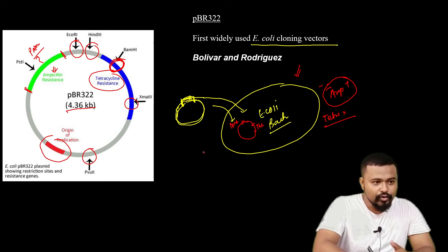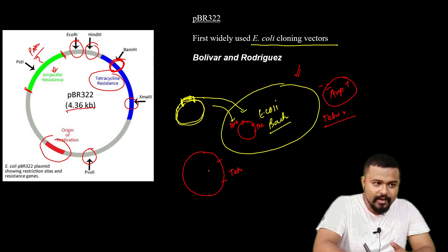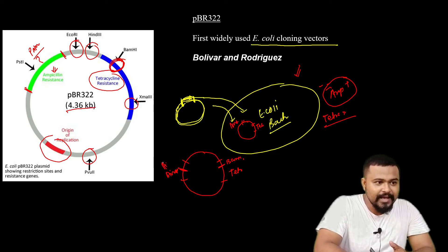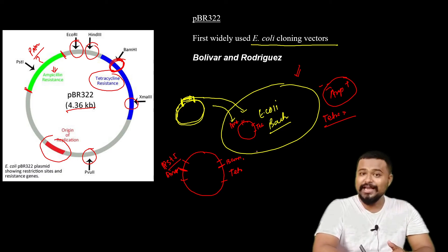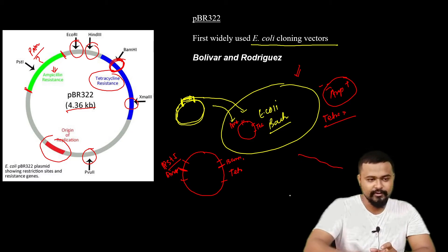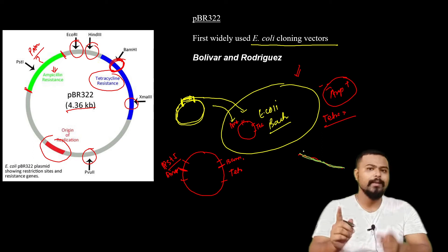To summarize the features of pBR322: it has a tetracycline resistance unit, an ampicillin resistance unit, and restriction sites including BamH1, PS2, and PST1. These restriction sites are important for inserting the gene of interest into the plasmid.